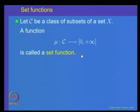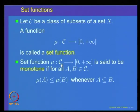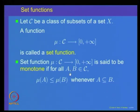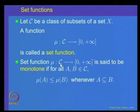Next, we will be analyzing such functions. Let us define a set function mu where C is a collection of subsets of a set X and 0 to plus infinity is the non-negative extended real numbers. A set function mu is said to be monotone if for any two sets A and B in C, mu of A is less than or equal to mu of B whenever A is a subset of B. This is called the monotone property.